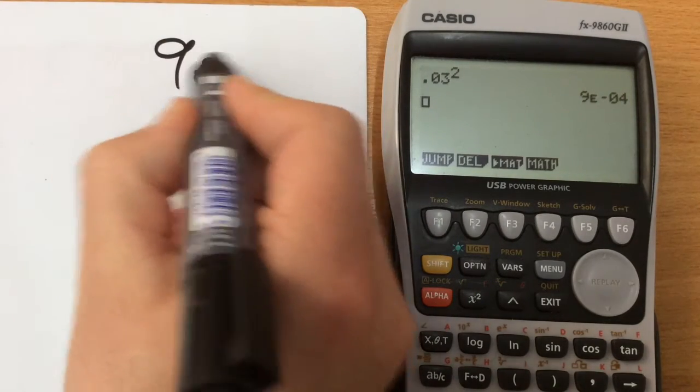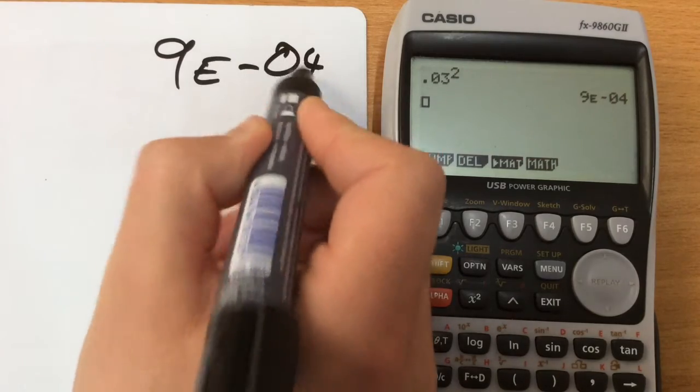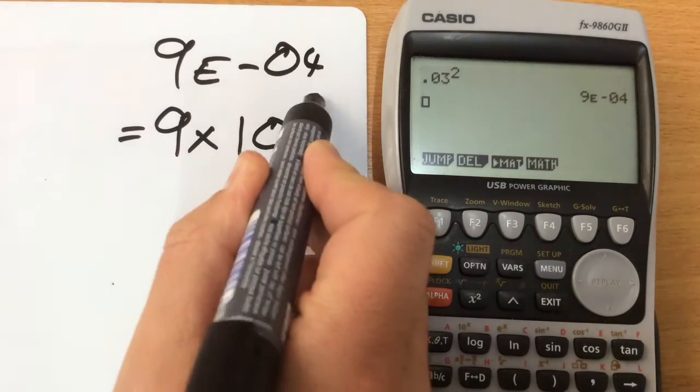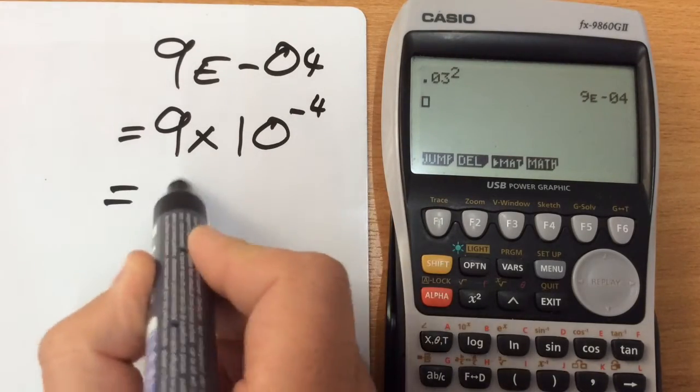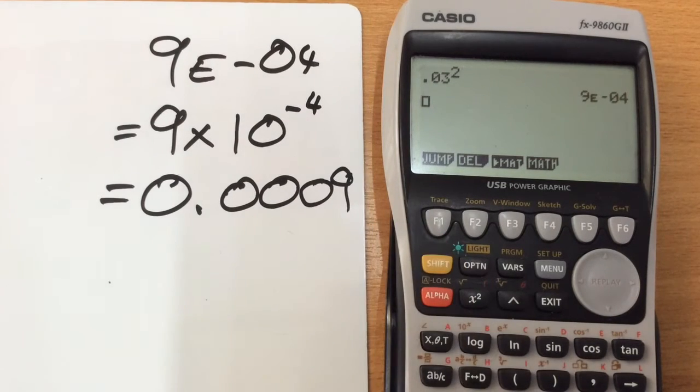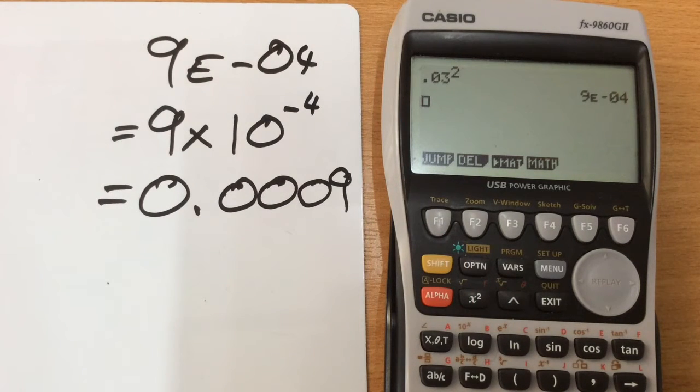Now 9e to the minus 4 is simply the calculator's way of writing 9 times 10 to the minus 4, it's the same thing, which of course is equal to 0.0009. So that's just the way that it represents it, but of course it's not necessarily too helpful to show things in that way.